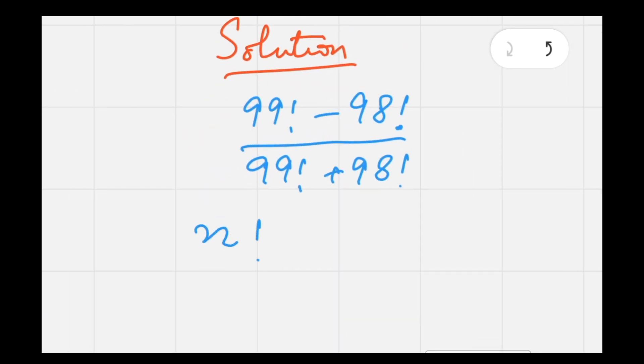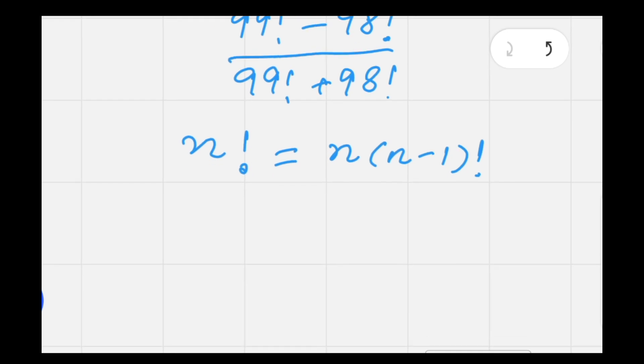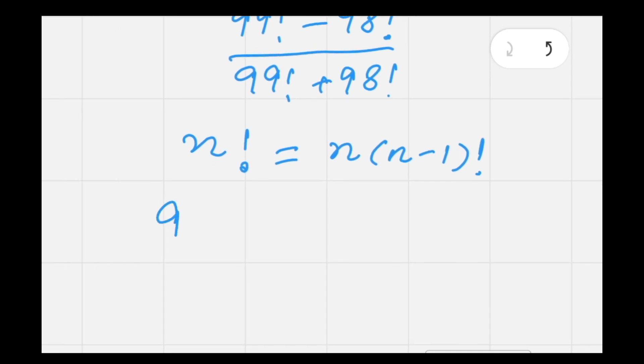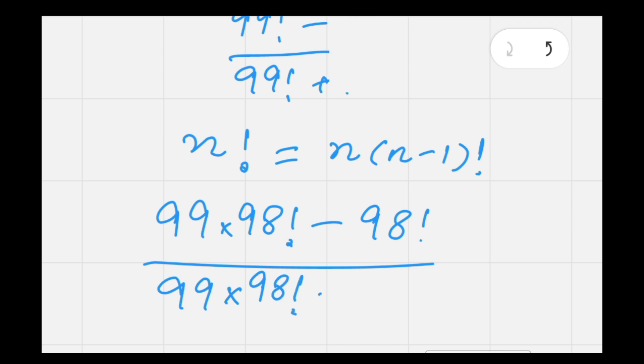We know that n factorial equals n times n minus 1 factorial, so breaking 99 factorial into 99 times 98 factorial minus 98 factorial, divided by 99 times 98 factorial plus 98 factorial.